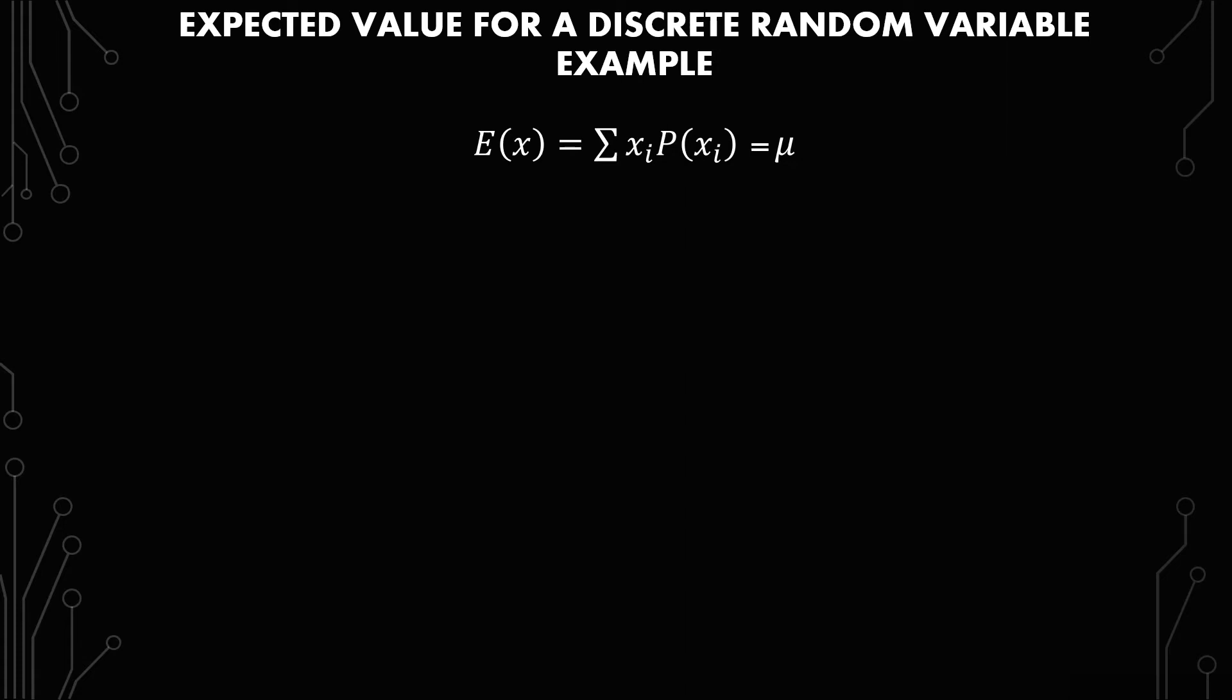In this video, I'm going to go over an example for an expected value for a discrete random variable. The formula is the expected value of x equals the summation of each x times the probability of that x, which also equals mu, or the mean.